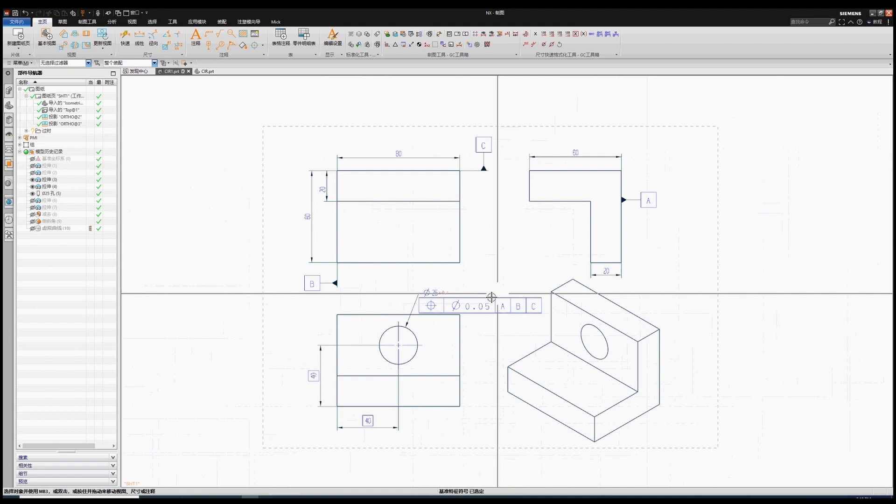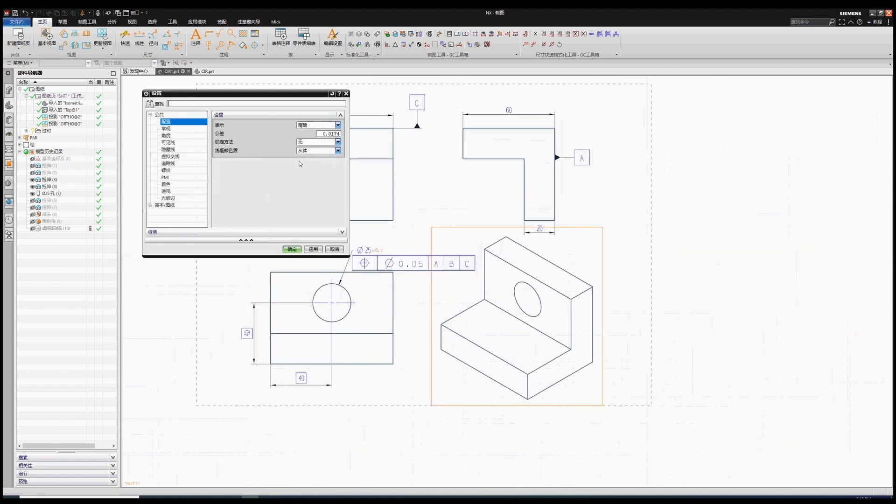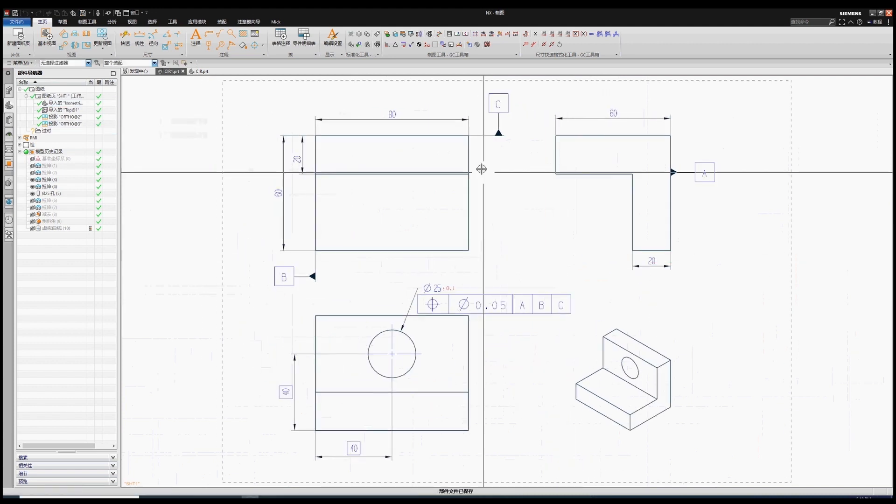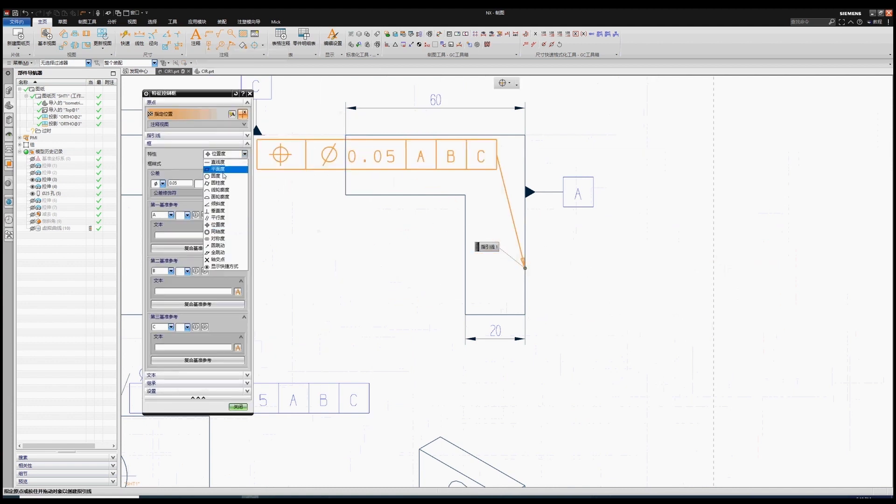The second one listed is the secondary and so on. The first one listed in the FCF could be either datum A, B or C in any order for that geometric feature. And there is no one datum that always applies to the entire drawing.